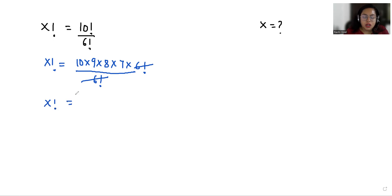x factorial equals 10, which we can write as 5 times 2, similarly 9 as 3 times 3, 8 as 4 times 2, and 7.